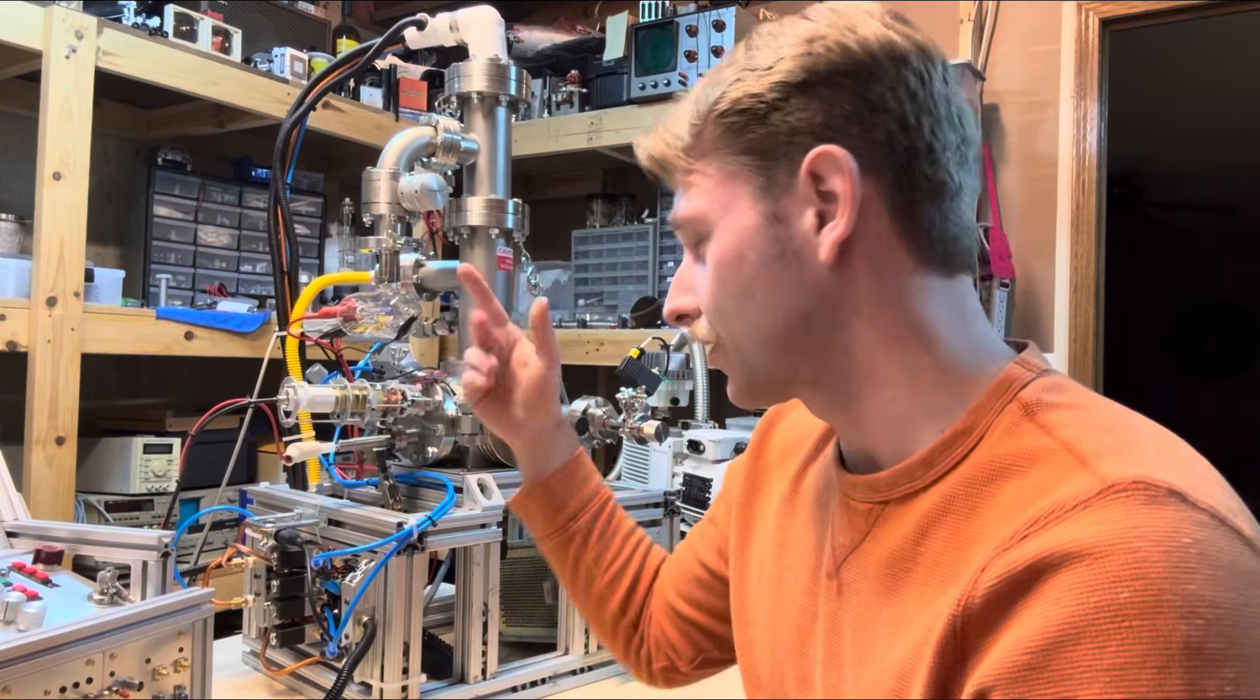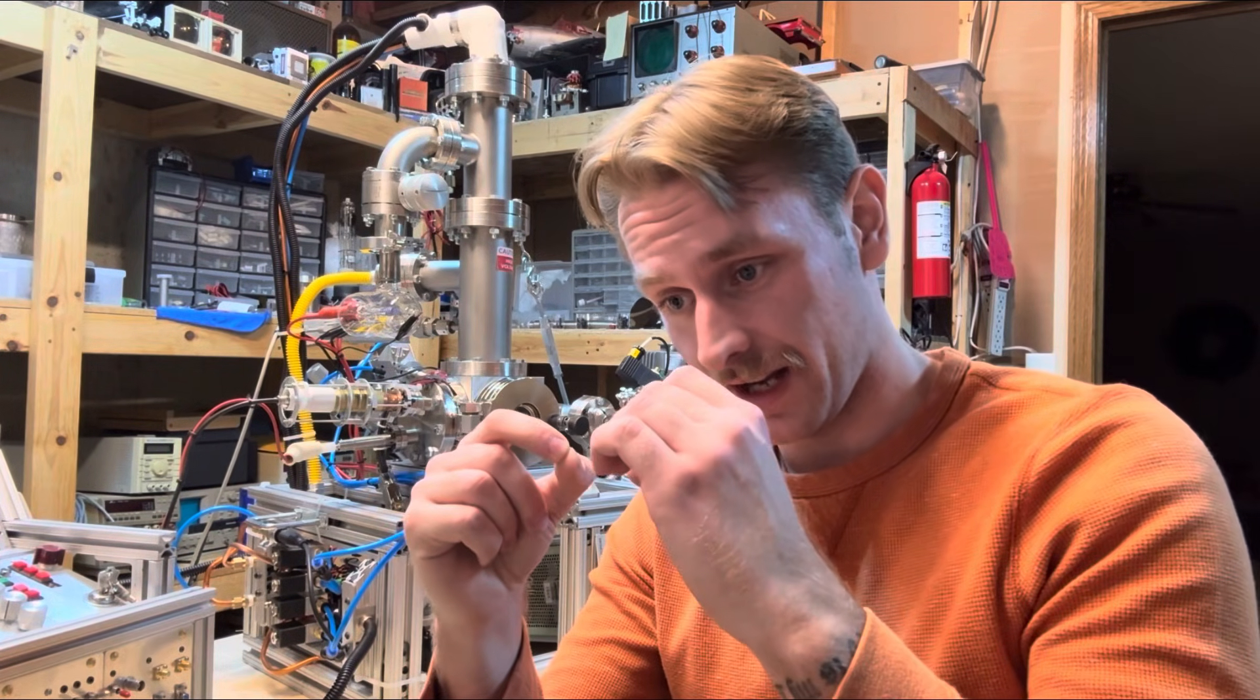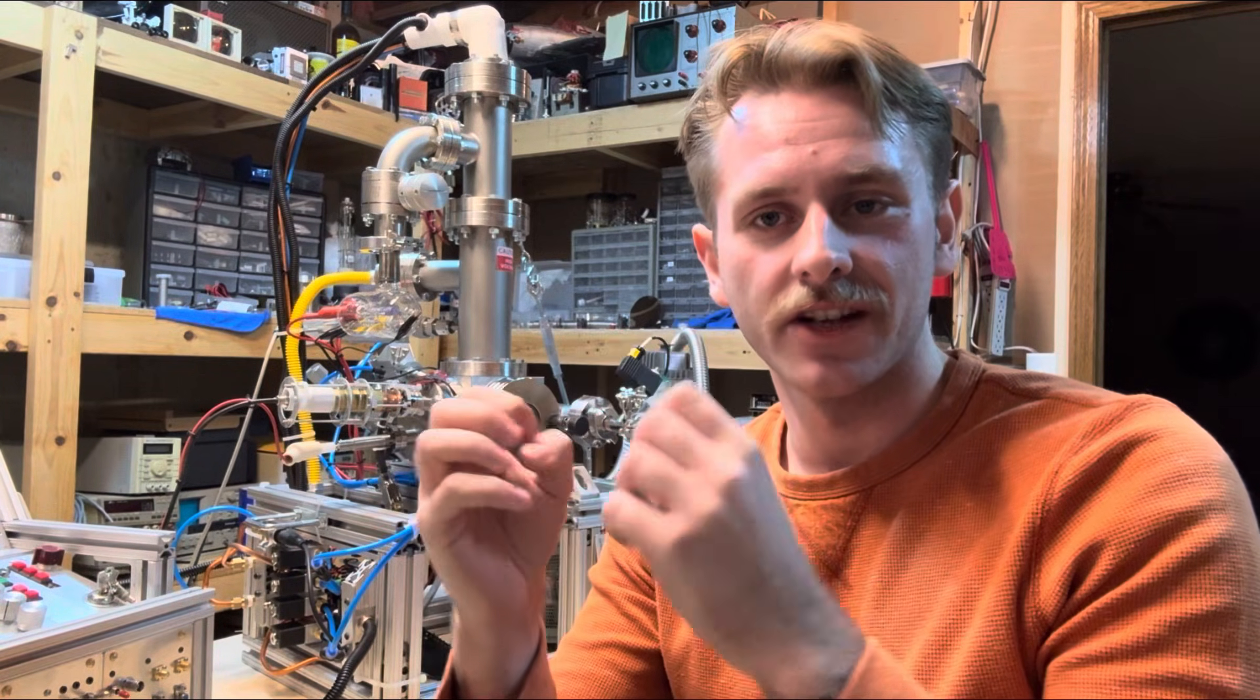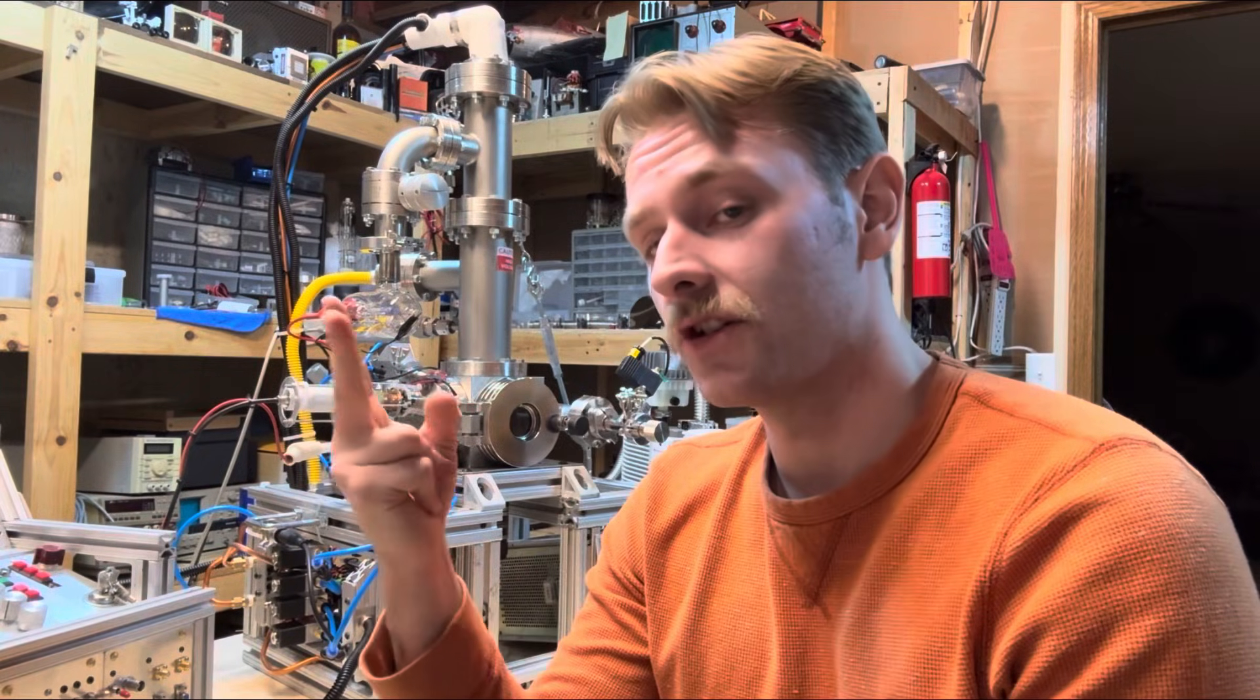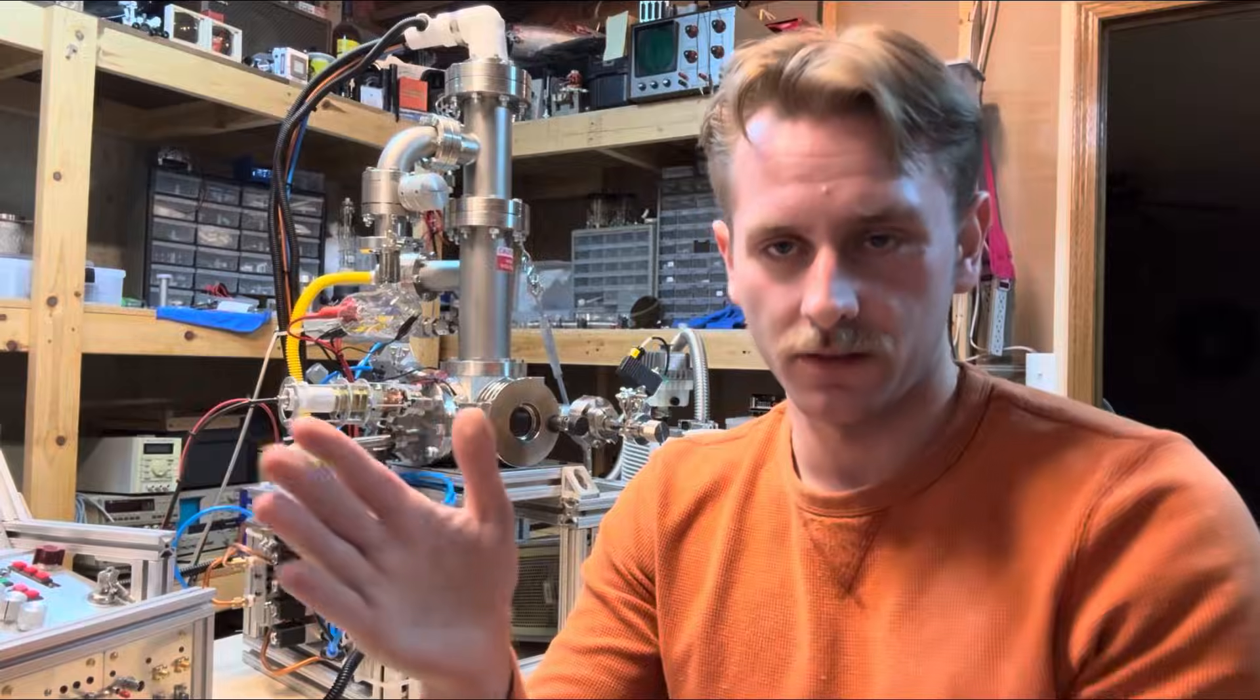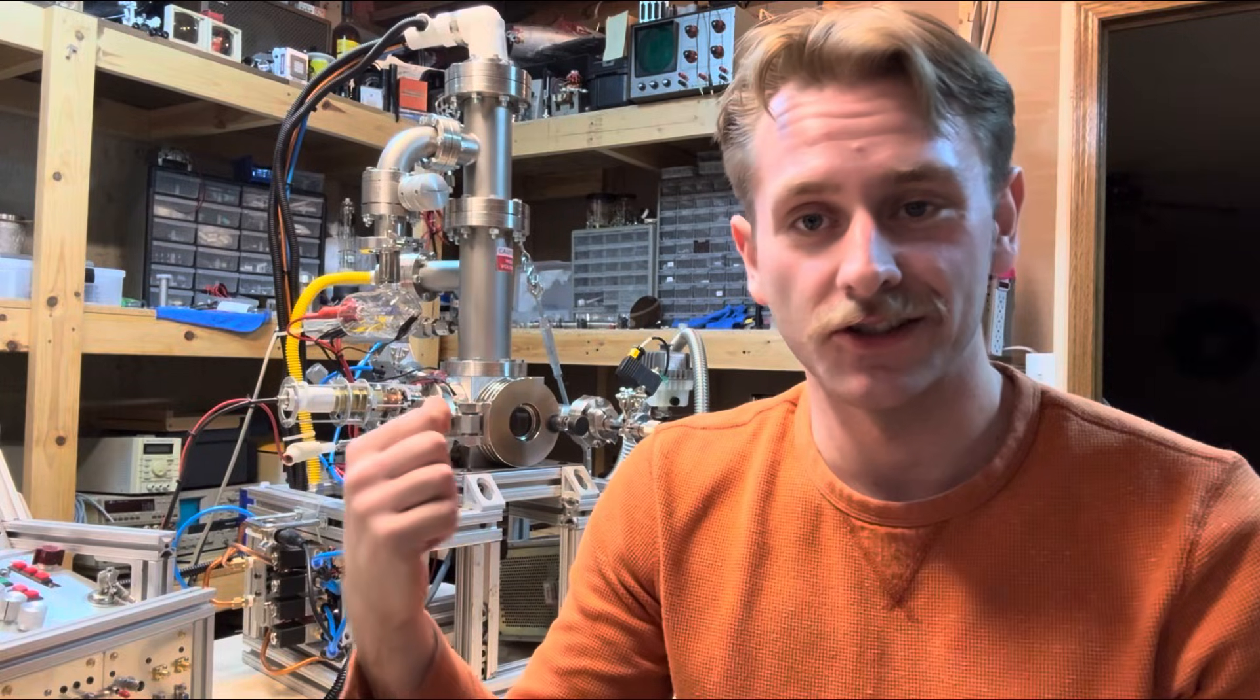Okay. So then you got your Pirani gauge, which has like a little heating element and a resistor. And depending on the resistance of that resistor, it'll tell us how much heat can conduct across the vacuum. And you'll know the pressure because of that. So you need two different gauges because that's only effective once you get to a low enough vacuum. There's just no way for the heat to get across anymore. And so then you need the nude ion gauge.